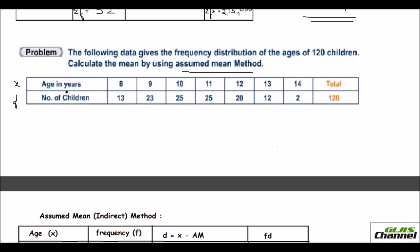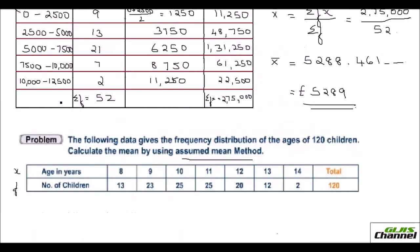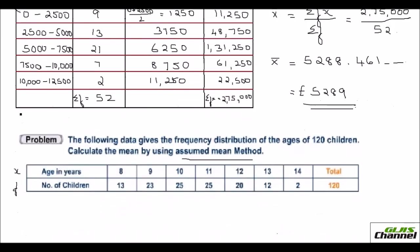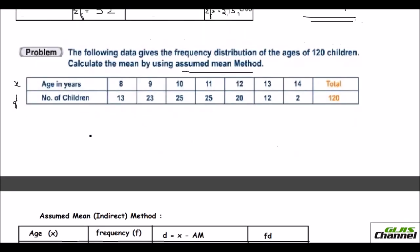Your age is your x value and the number of children is the frequency. You can notice the difference from the previous problem: there they gave the class interval so you had to calculate the midpoint as your x value. Here the x value is directly given, so you don't need to calculate that. The total frequency is already given as 120.